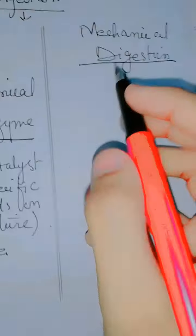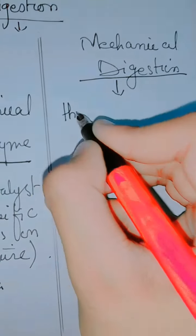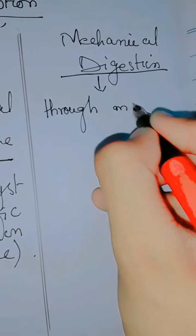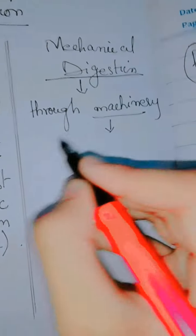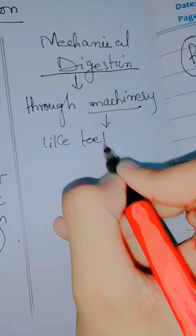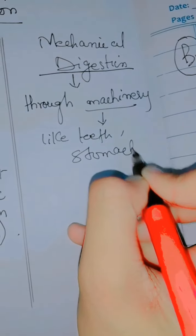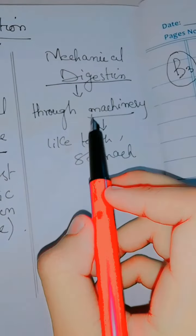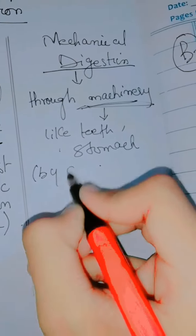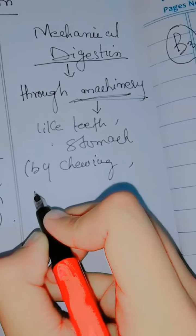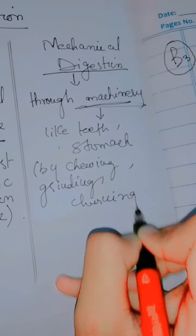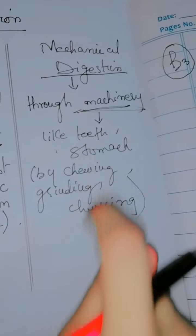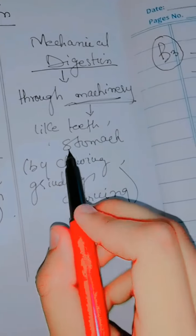Mechanical digestion is a process through machinery — like teeth and the stomach. For example, the chewing and grinding process by teeth, and the churning process happening in the stomach, are both forms of mechanical digestion.